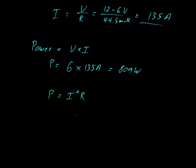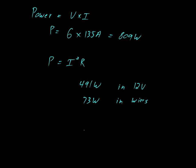I won't show you all the calculations. But we can calculate that there is 490 watts being dissipated in the 12 volt battery. There is 73 watts being dissipated in the wires. And there is 245 watts, approximately, in the 6 volt battery.